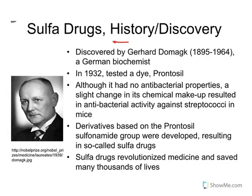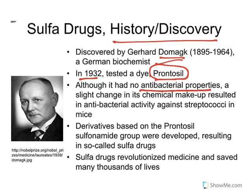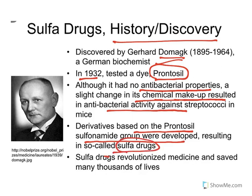The history of sulfonamides: they were discovered by Domagk, a German biochemist, in 1932. He tested a dye called prontosil, which did not have antibacterial properties, but a slight change in its chemical structure resulted in antibacterial activity against streptococcal infection in mice. Derivatives based on prontosil's sulfonamide group were developed, resulting in sulfa drugs. Prontosil is the prototype of the sulfa drug, and these drugs revolutionized medicine and saved many thousands of lives.